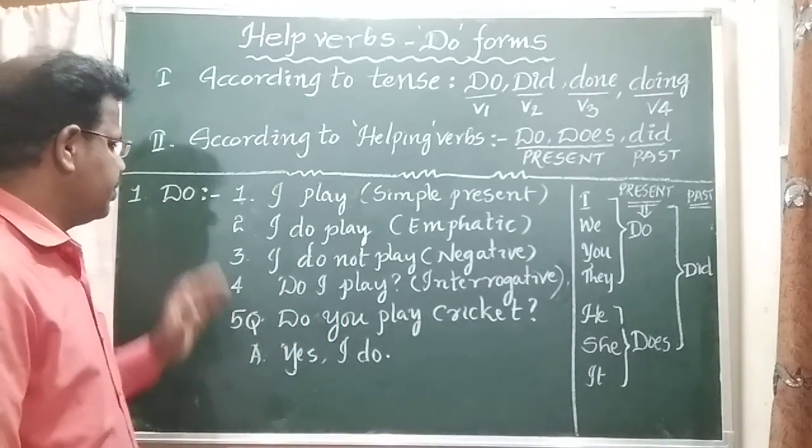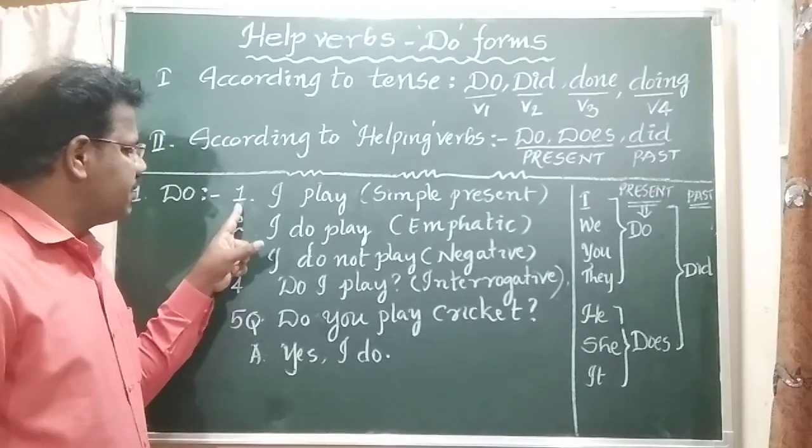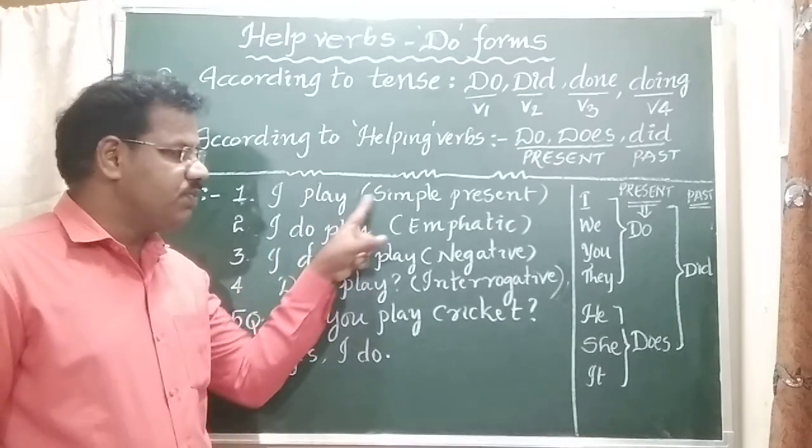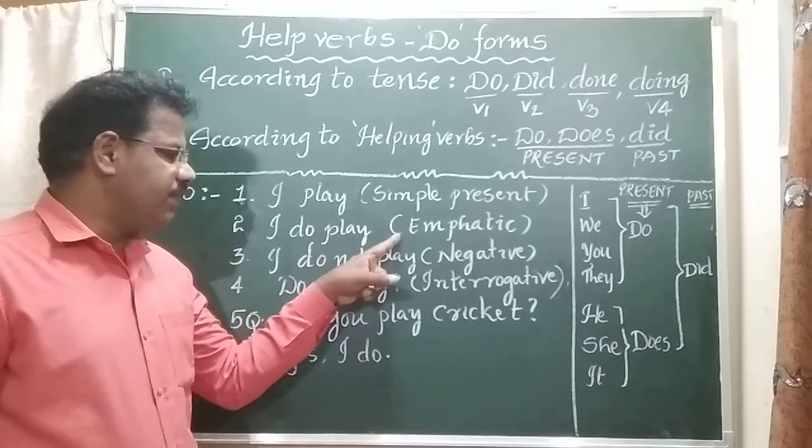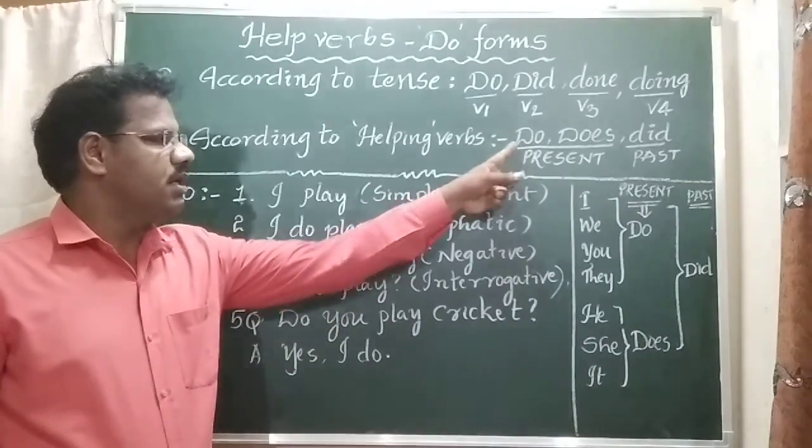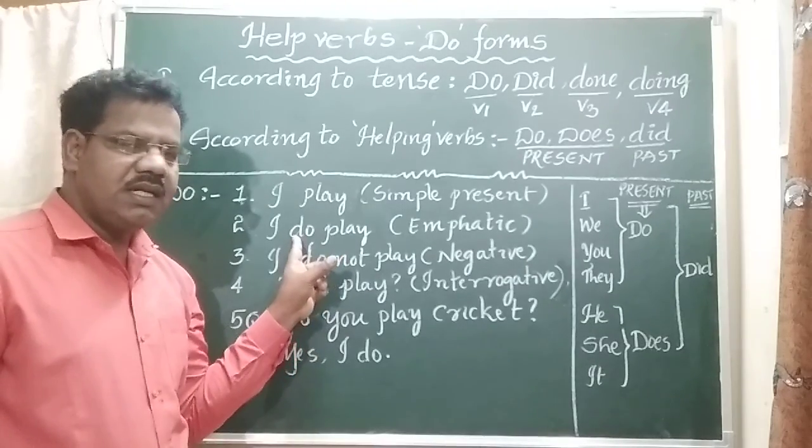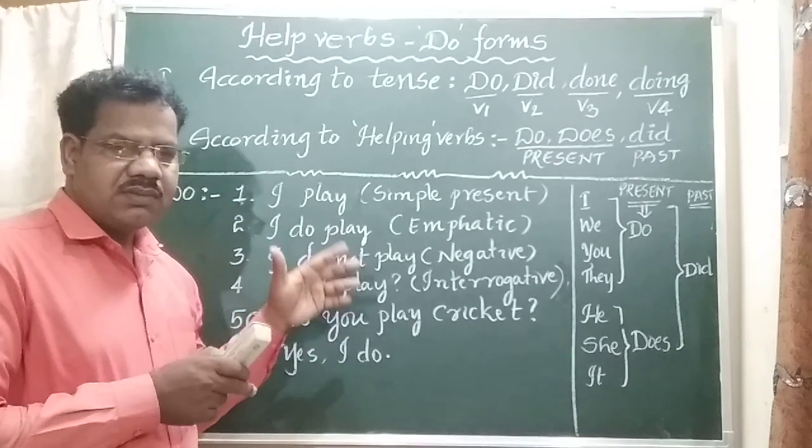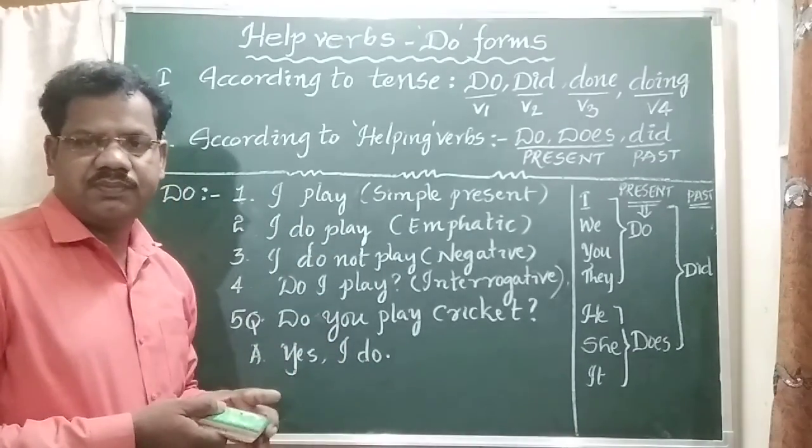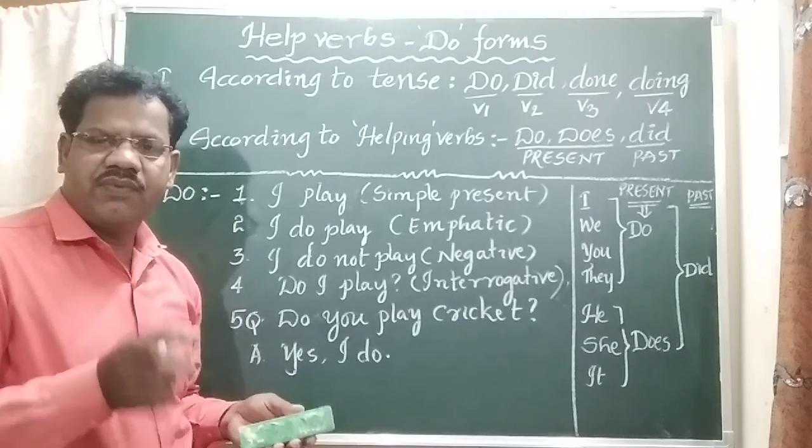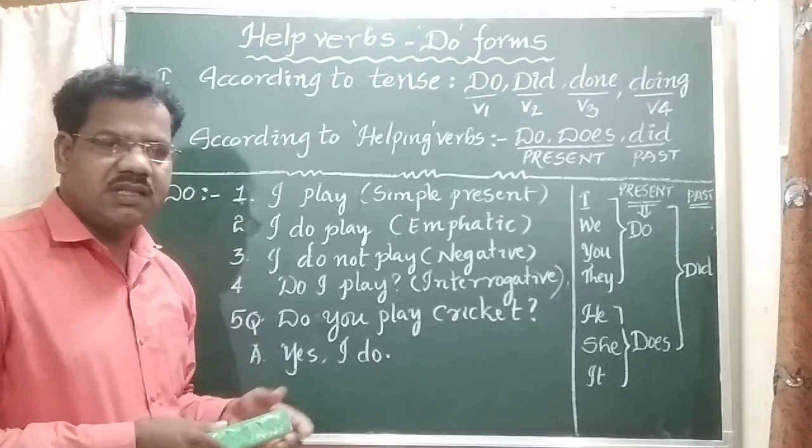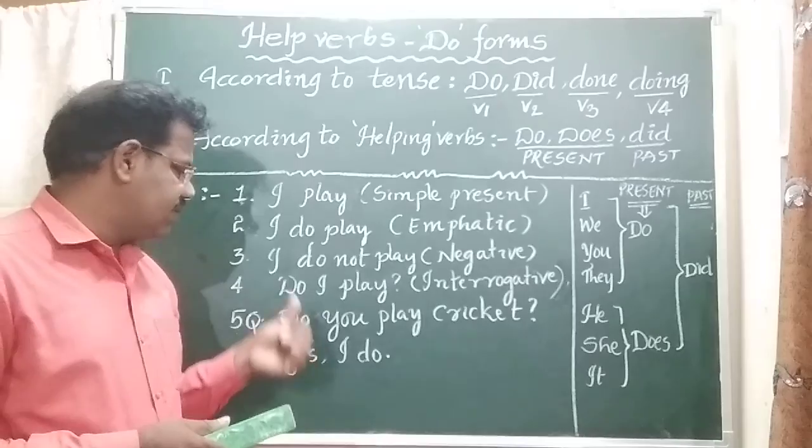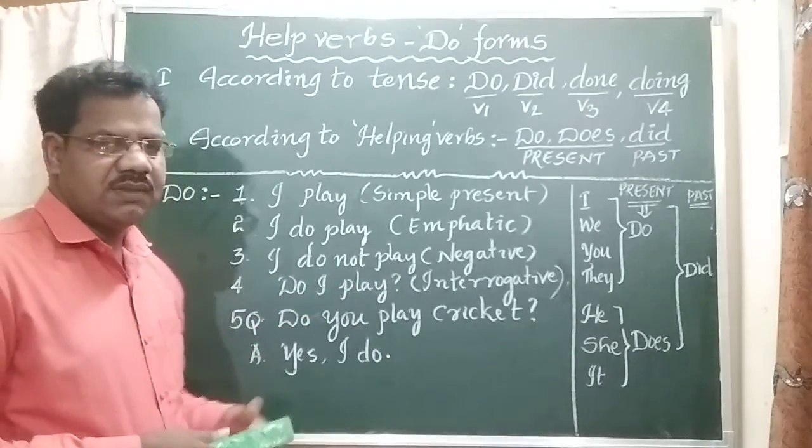Now we discuss Do Form usages. Example: I play - simple sentence. I do play means emphatic. In the emphatic sense, Do is applied. I do play. I do not play.